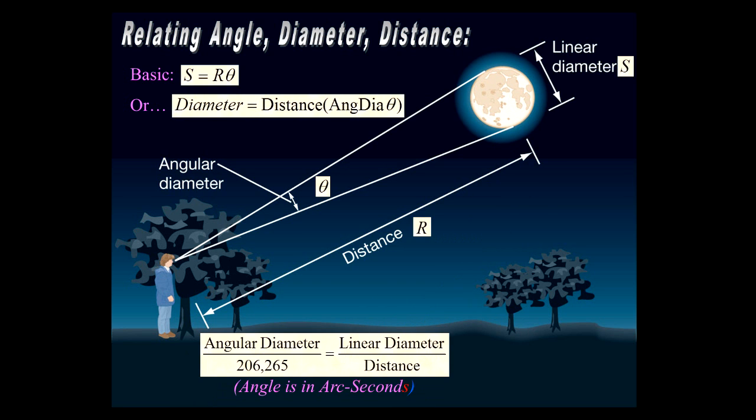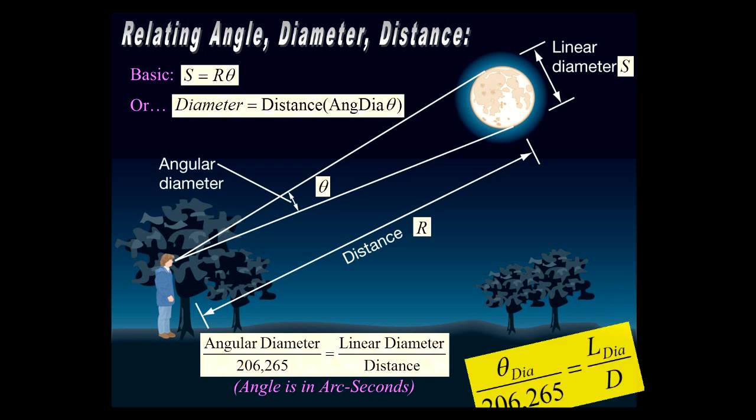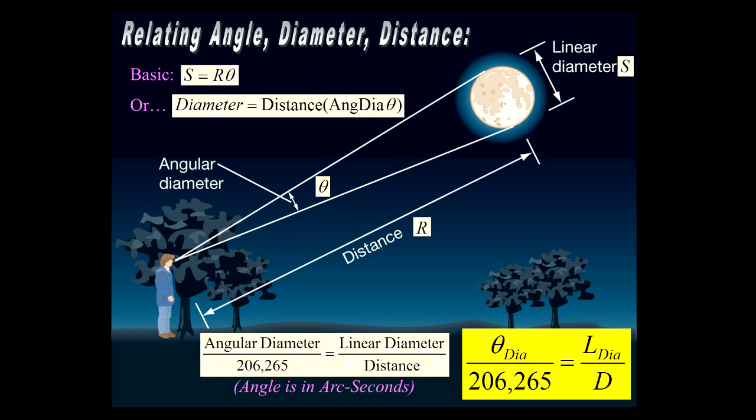And so here's the formula in a little bit more detail after you convert it so that it is in units that are useful. So the angular diameter over 206,265—this number here is simply to make it work so that the angular diameter is in arc seconds. It's just a conversion factor. That's the linear diameter divided by the distance. So here it is in shorthand form: θ diameter over 206,265 equals linear diameter over distance. So file that away in your memory so that if it gets jogged in the future of this course, you'll know where to go find it.